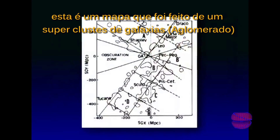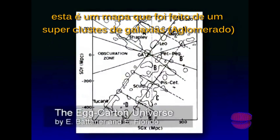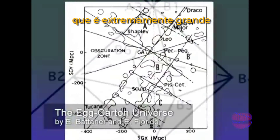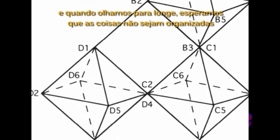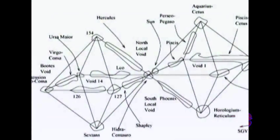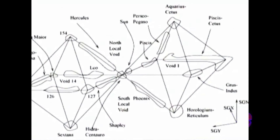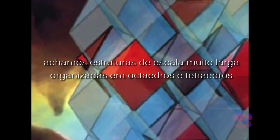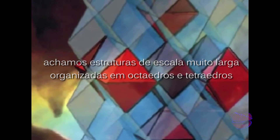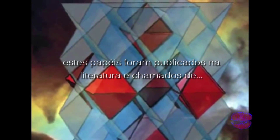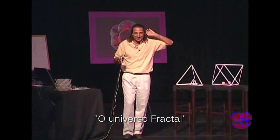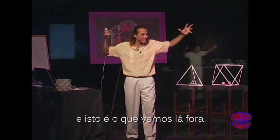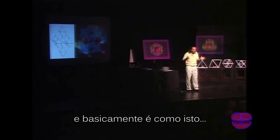These are surveys done of superclusters of galaxies at an extremely large scale. When they looked that far, they expected things to be quite chaotic and disorganized, but instead they found the exact contrary. These very large-scale structures are organized in octahedrons and tetrahedron arrays way out there. These papers are actually published in the literature and called the fractal or egg carton universe.